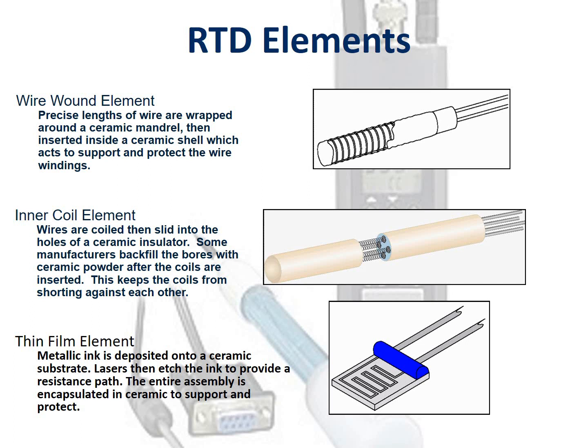In the inner coil element RTD, wires are coiled then slid into the holes of a ceramic insulator. Some manufacturers backfill the bores with ceramic powder after the coils are inserted to keep the coils from shorting against each other. In the thin film element RTD, metallic ink is deposited onto a ceramic substrate. Lasers then etch the ink to provide a resistance path, and the entire assembly is encapsulated in ceramic to support and protect it.